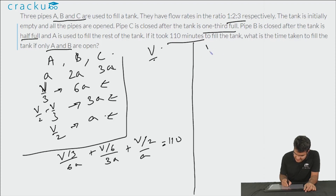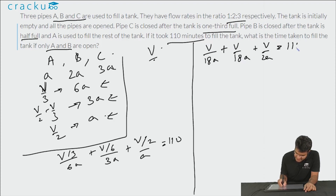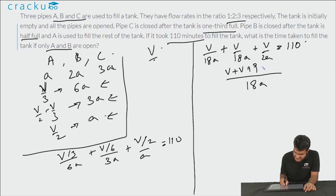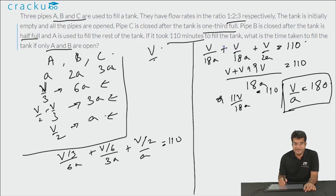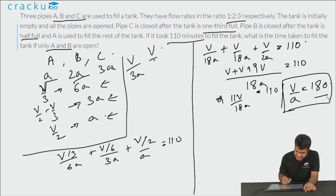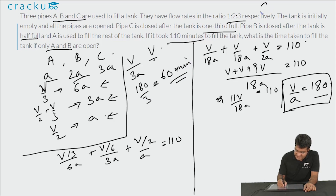Simplifying with common denominator 18a: V + V + 9V = 1980, so 11V/18a = 110, giving V/a = 180. If only pipes A and B are used, total flow rate is a + 2a = 3a. Time = V/3a = 180/3 = 60 minutes. Therefore the answer is 60 minutes.